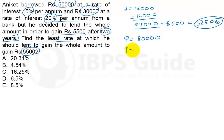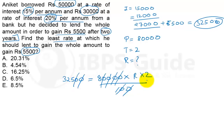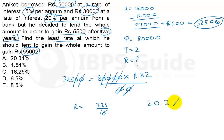Using the simple interest formula: Interest = P × R × T / 100. So 32,500 = 80,000 × R × 2 / 100. Solving: R = (32,500 × 100) / (80,000 × 2) = 3,250,000 / 160,000 = 20.3125%. So approximately 20.31% — option number A is the correct answer.